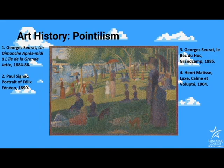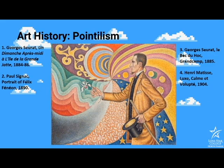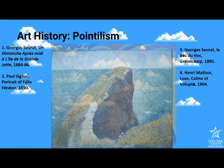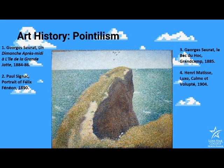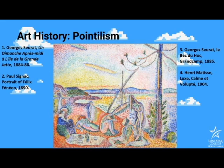We have a few more examples of pointillism. This is a Paul Signac portrait, another George Seurat, and finally a Henry Matisse. All of these images use individual dots of color that if you were to look at them up close, they don't have a lot of meaning. But when you step back, as with most pieces of Impressionist art, they form a larger and more beautiful image.